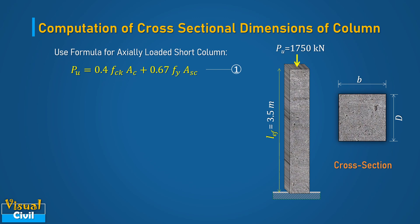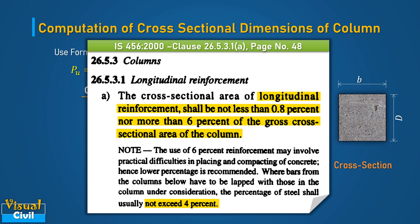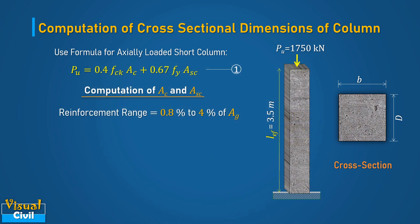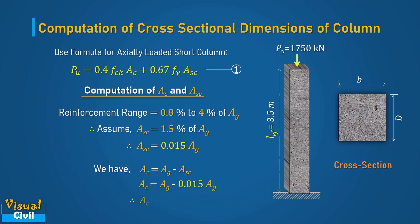Let us compute the area of concrete and the area of reinforcement. Based on clause 26.5.3.1, the range of longitudinal reinforcement is 0.8% to 4% of the gross cross-sectional area of a column. Hence, assume the value of ASC equal to 1.5% of AG. The area of concrete can be computed by deducting the area of steel ASC from the gross area AG. After solving, we get the area of concrete AC equal to 0.985 times the gross area AG.